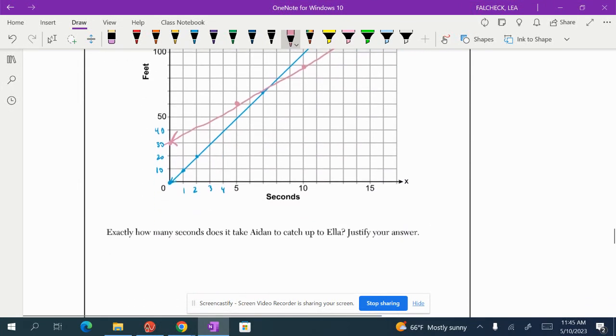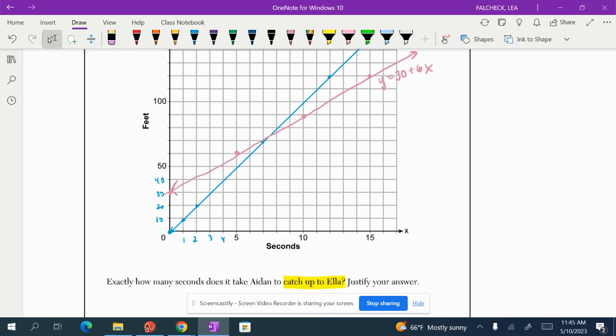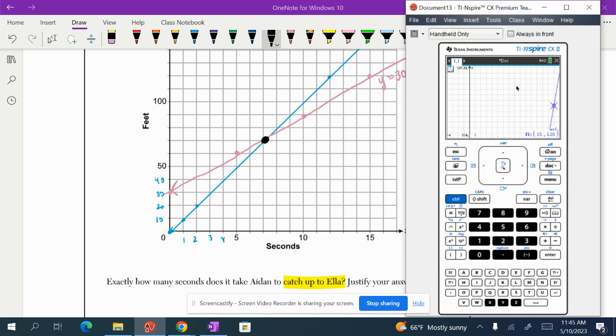And then here it says exactly how many seconds does it take Aiden to catch up to Ella? So when they catch up to Ella, they are at the same feet from the starting line. Their y value is the same. So let's find the point where the two graphs cross. I just want to make sure that we have an accurate intersection point because when you graph by hand, it's not always accurate. So I already have Ella's equation in here. I'm going to add Aiden's just to make sure that I have a good idea of what it looks like.